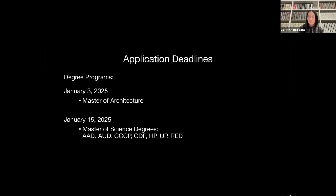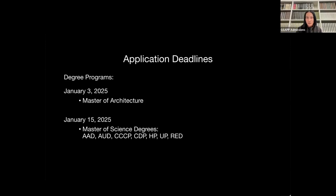Our application deadlines are January 3rd for the Master of Architecture program and January 15th for all other programs. It's really important that you have all of your materials received by the deadline. For example, if you are taking a TOEFL test or want to submit GRE scores, those need to be received by us by those deadlines as well. Right after the deadlines, we'll be compiling all the information to prepare them for review, and the review cycle is very short.